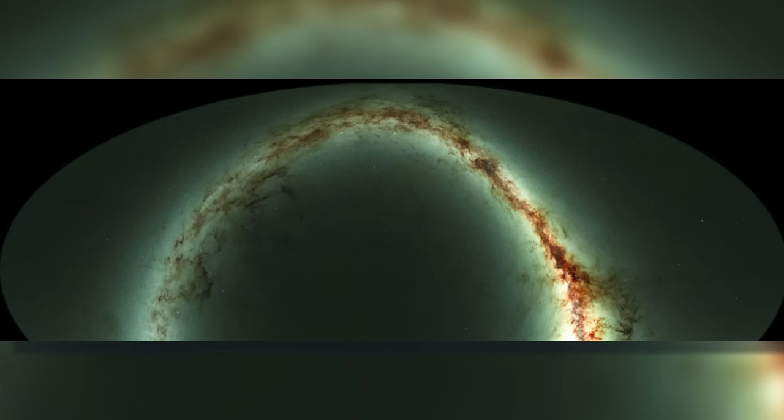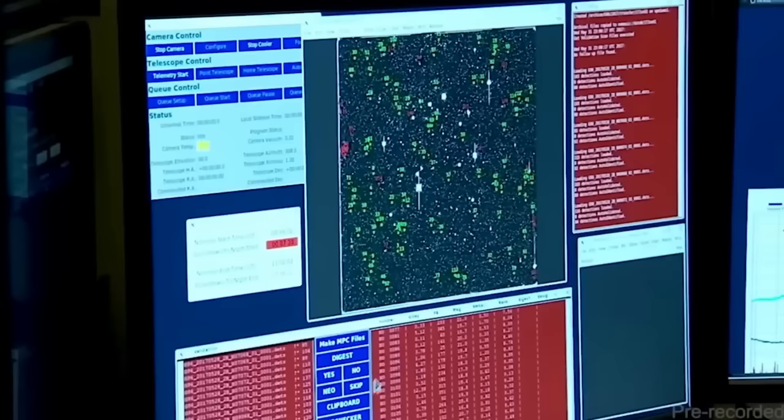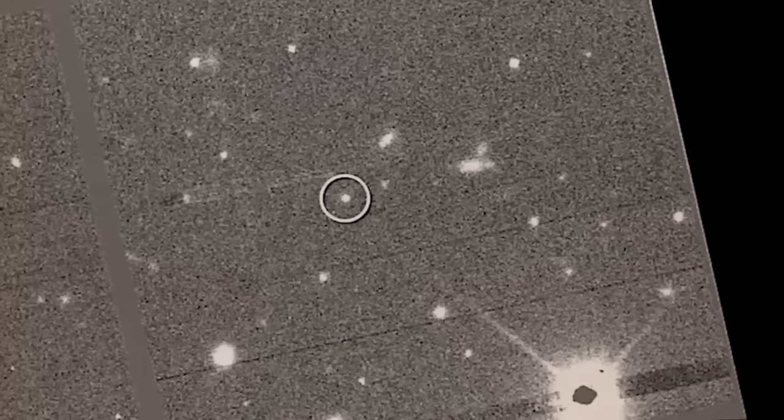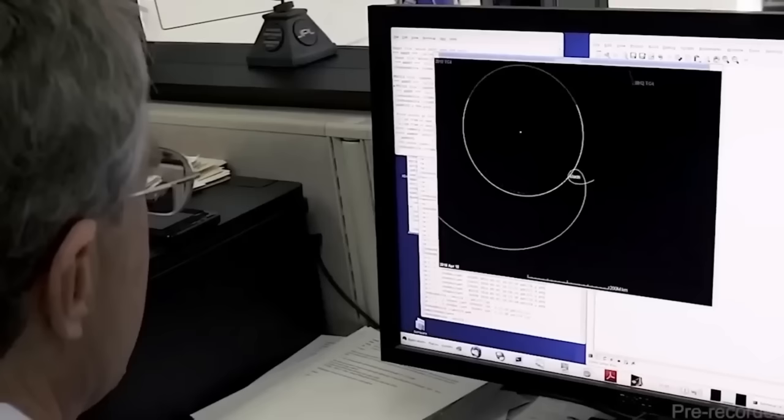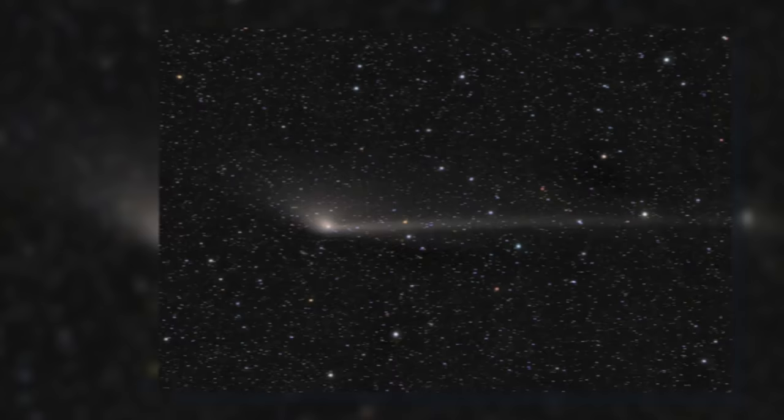The Pan-STARRS-1 leans on the innovative PS1 image processing pipeline (IPP) to manage the colossal data influx from these observations. This state-of-the-art software seamlessly processes and sifts through enormous observational data sets, drawing out crucial insights and allowing astronomers to unveil novel findings. The synergy of sophisticated algorithms and computational prowess is instrumental in deciphering the enigmas.